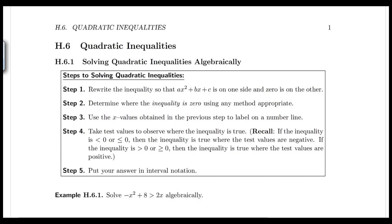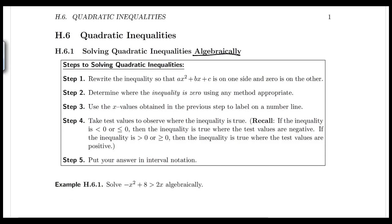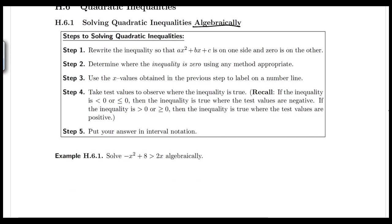Part two of solving quadratic inequalities is solving them algebraically. Not all the time are we going to graph and then determine the zeros to find the intervals for the solution — we want to know an algebraic way of solving these. Here are a series of steps: the first step is to rewrite the inequality so that the quadratic is on one side and zero is on the other.